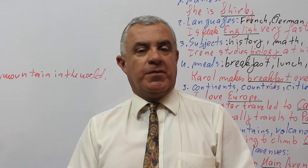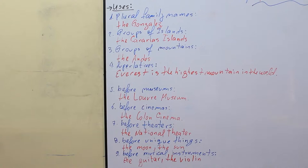The uses of the definite article are, number one, with plural family names, for example, the Gonzales. With a group of islands, the Canarias Islands.